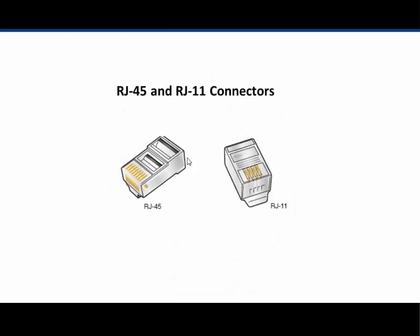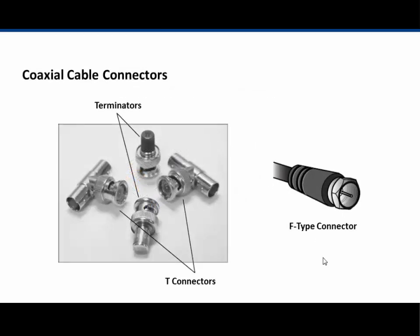RJ45 and RJ11 connectors: an RJ45 is for all four pairs, while an RJ11 is used on telephone networks and has only two pairs. For coaxial cable, you can see the early types of terminators used in a thin net network: T connectors and terminators. There is also an F-type connector — the type seen on cable TV networks — which plugs into your cable modem.